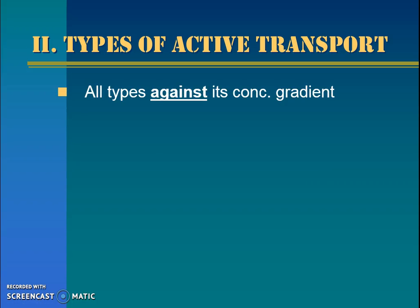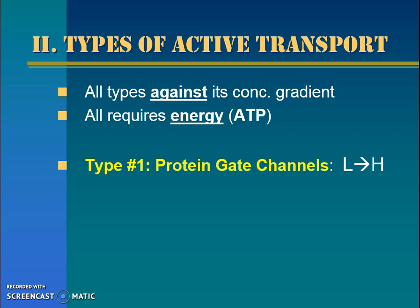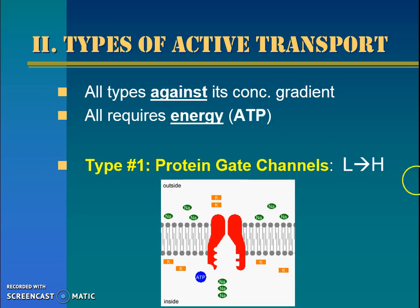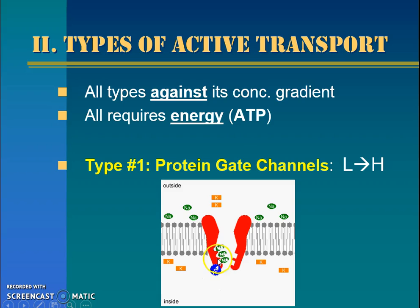All of these types are going to go against the concentration gradient, meaning they're going to require ATP because they're going the opposite direction — think about it going up the slide, from low to high. The first type going from low concentration to high concentration is protein gated channels. We've seen protein channels that can facilitate regular diffusion, but this type is going to go the opposite direction. We're seeing these green circles — they're going to clamp into this gate, and there's an ATP that becomes an ADP.